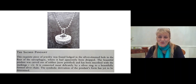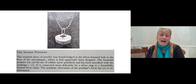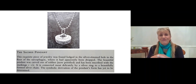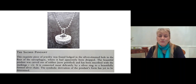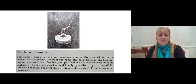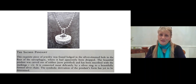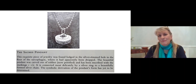He says: 'This exquisite piece of jewelry was found lodged in a silver-rimmed hole in the floor of the sarcophagus, where it had apparently been dropped.' He doesn't make the connection that the perfect fit suggests it might have been designed to go in there. 'The beautiful pendant,' he says, 'was carved out of rubber, now petrified, turned to stone over time, and has been inscribed with the markings one and a half. It is connected, most delicately, by a silver ring to a beautifully formed silver chain. The symbolic derivation of the pendant's form has yet to be determined.'